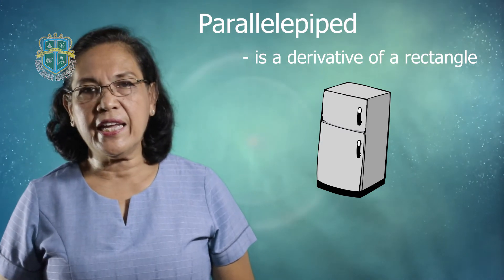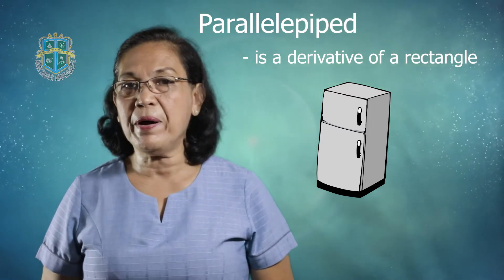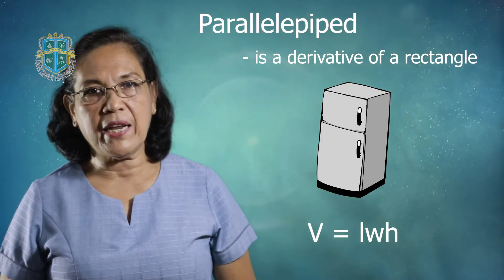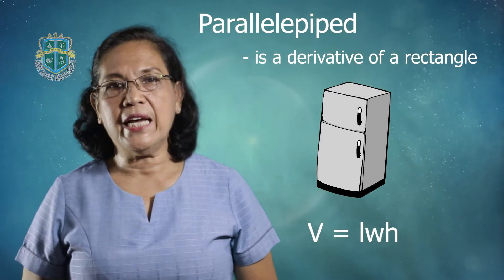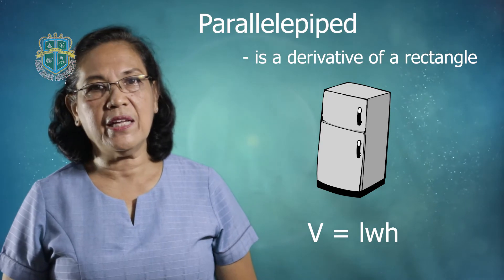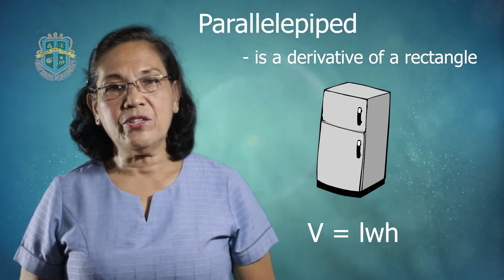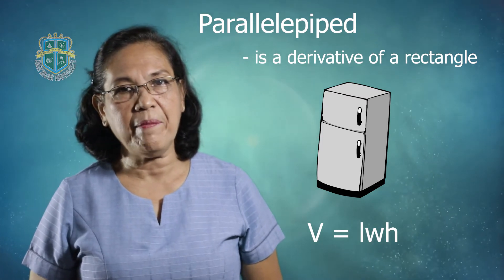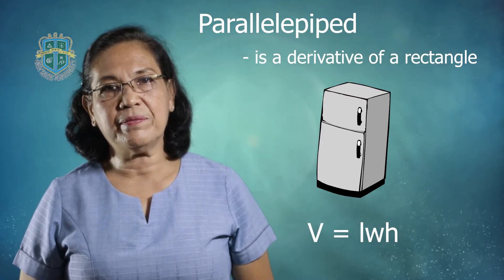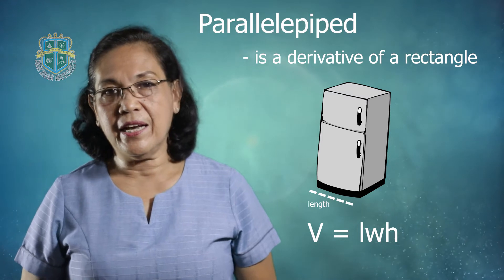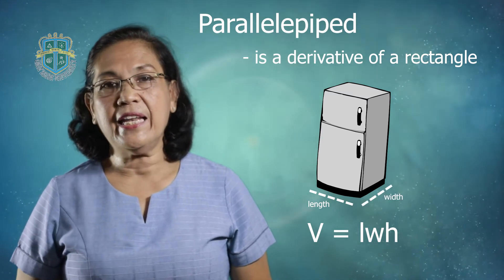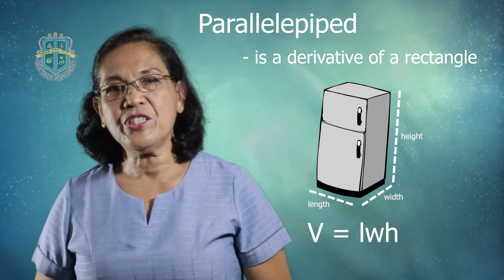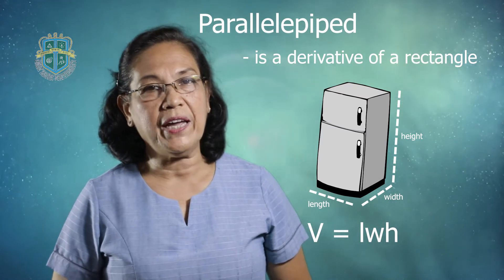The formula for getting the volume of a parallelepiped is: volume equals length times width times height. So imagine your refrigerator — it has three dimensions: you have the length, you have the width, and you have the height. Now suppose we are asked to get the volume of a parallelepiped.